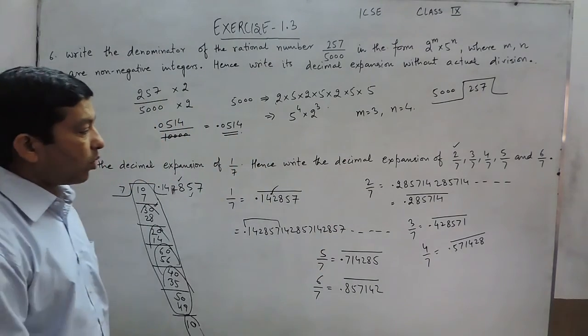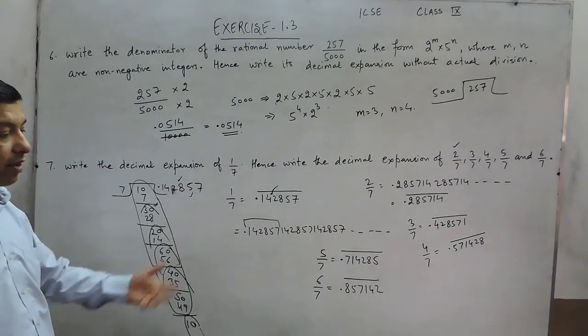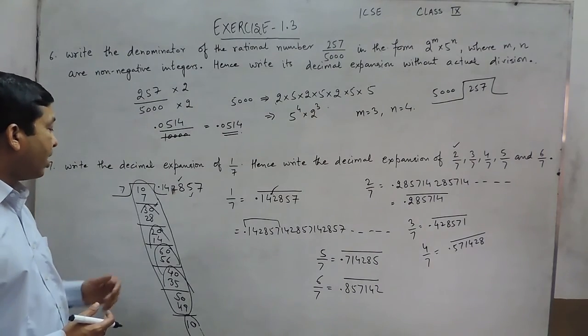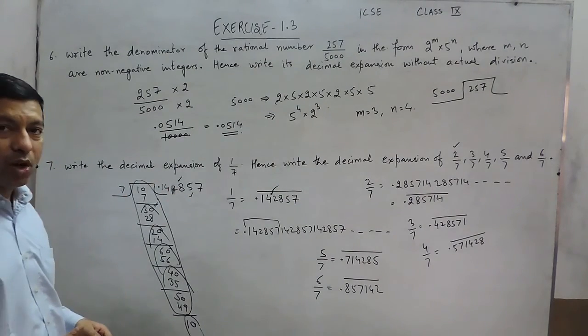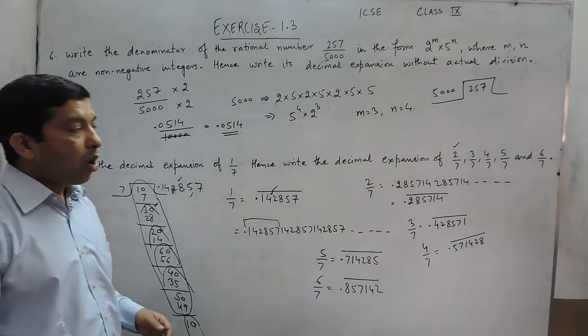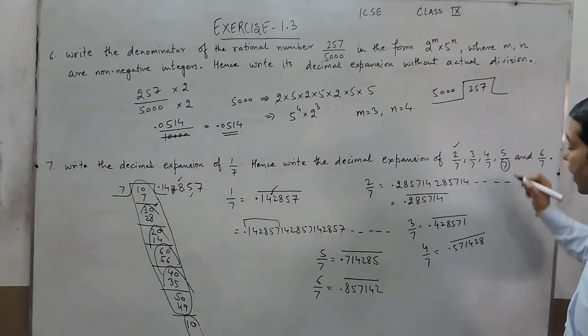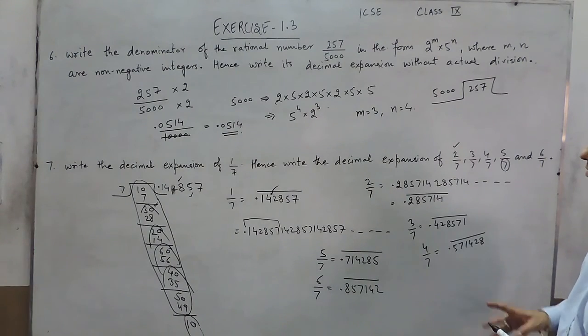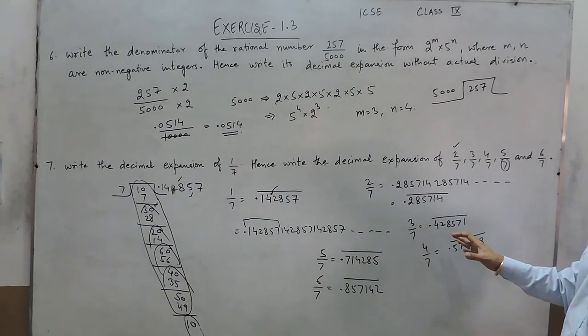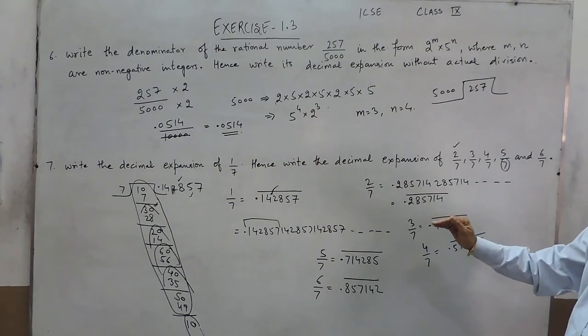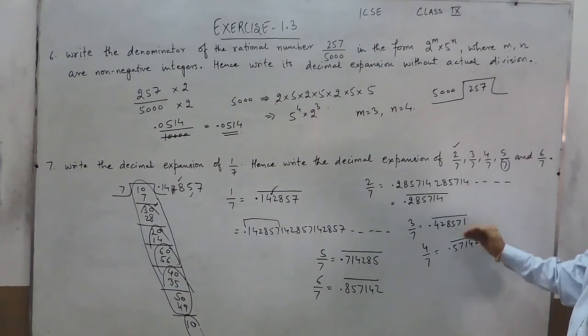So this way we can calculate 2 upon 7, 3 upon 7, 5 upon 7 or any value once we have calculated the value of 1 upon 7. So this is very simple that when in the denominator there is any factor except 2 or 5, then these are always the non-terminating repeating rational numbers.